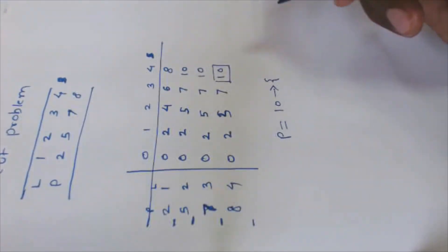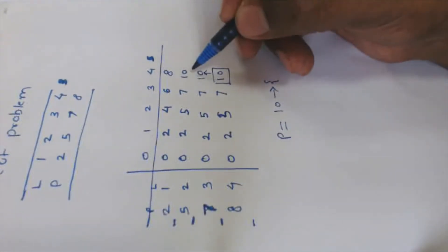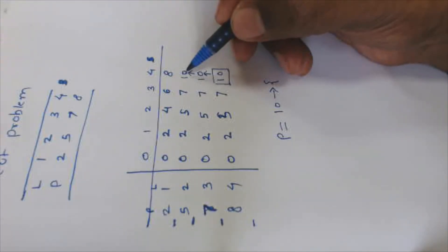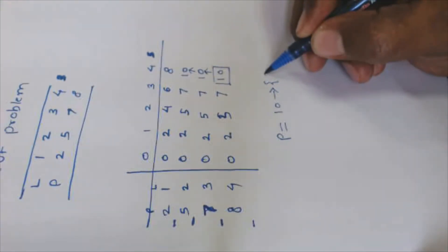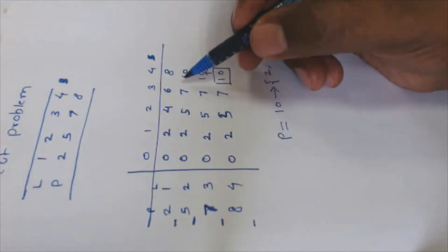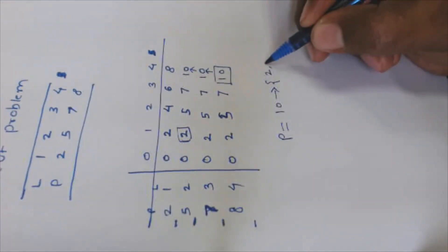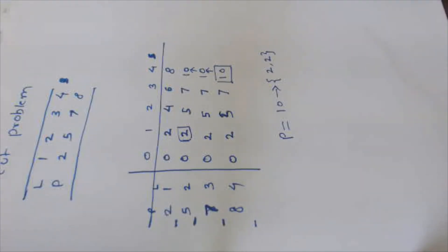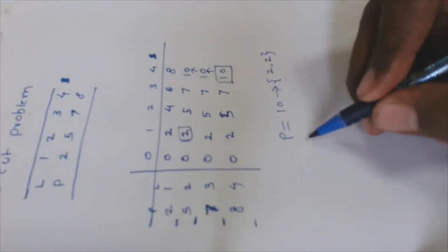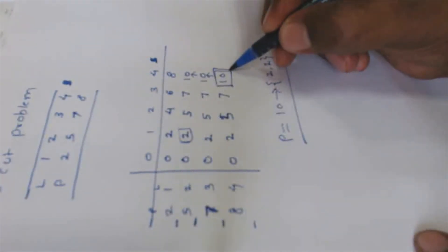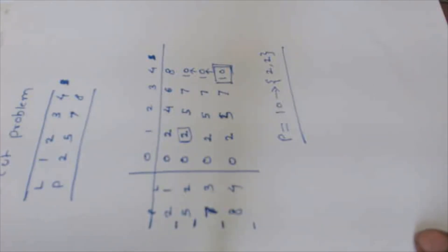How did we achieve this profit of ten? Ten was collected from the previous location. The rod was cut into two parts of length two. Each length-two rod achieves five, so five plus five equals ten. This is the maximum profit we can get. We use memoization to trace back the locations from where we collected the optimal rod cut of length two plus two.